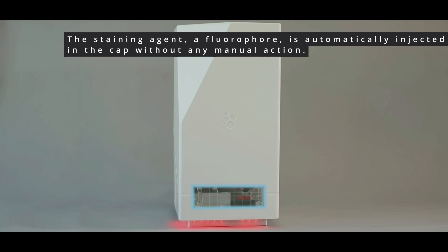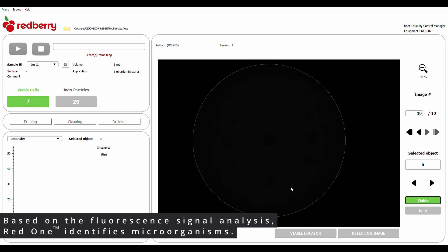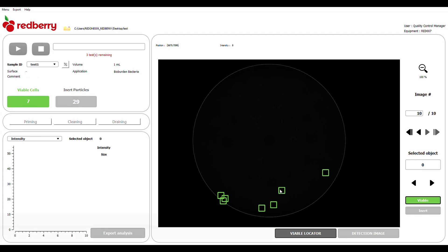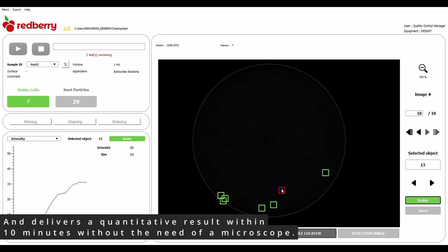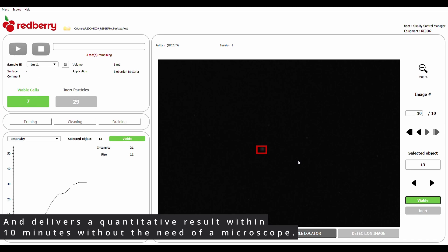The staining agent, a fluorophore, is automatically injected in the cap without any manual action. Based on the fluorescent signal analysis, RedOne identifies microorganisms and delivers a quantitative result within 10 minutes without the need of a microscope.